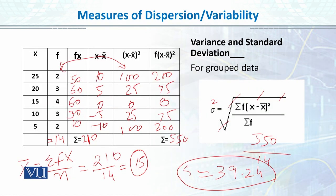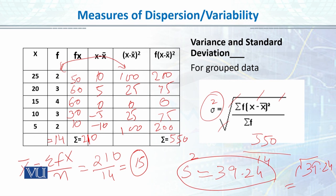If we consider this as a population rather than a sample, the variance notation would be sigma squared (here the value was 39.24), and to get the population standard deviation sigma, we take the square root of 39.24, which equals approximately 6.28. Standard deviation is the best and most refined measure because it takes into account each and every value in the data, finds its distance from the mean, squares them, and then takes the square root.